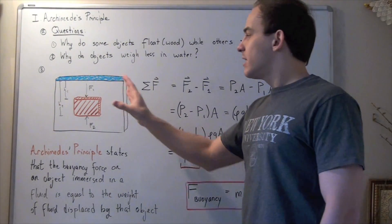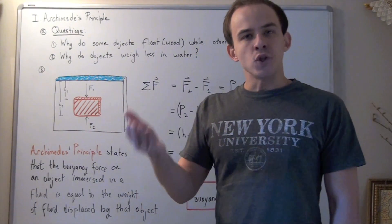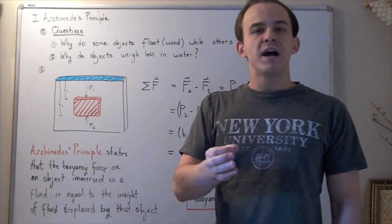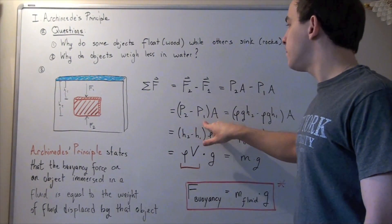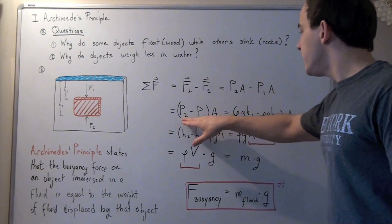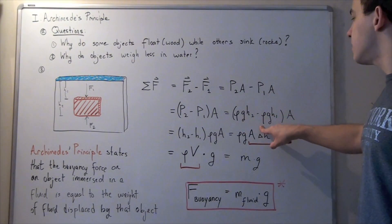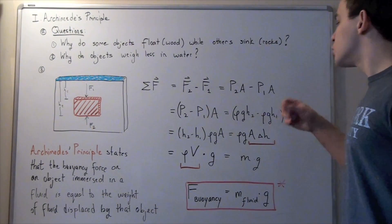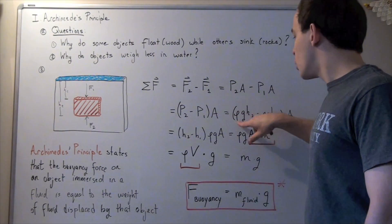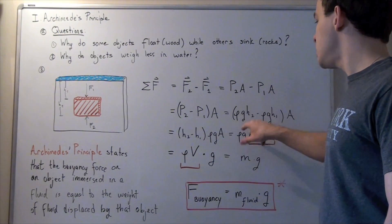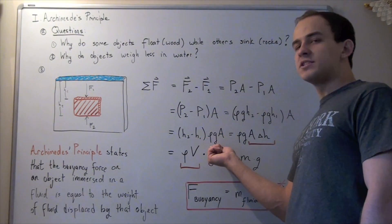Now what is fluid pressure? We found that fluid pressure is the density of the fluid multiplied by the gravitational constant G, multiplied by the height from the surface of the fluid. Note that for P2 the height is H2, and for P1 the height is H1. So we get A multiplied by the quantity: density of fluid times G times H2, minus density of fluid times G times H1.